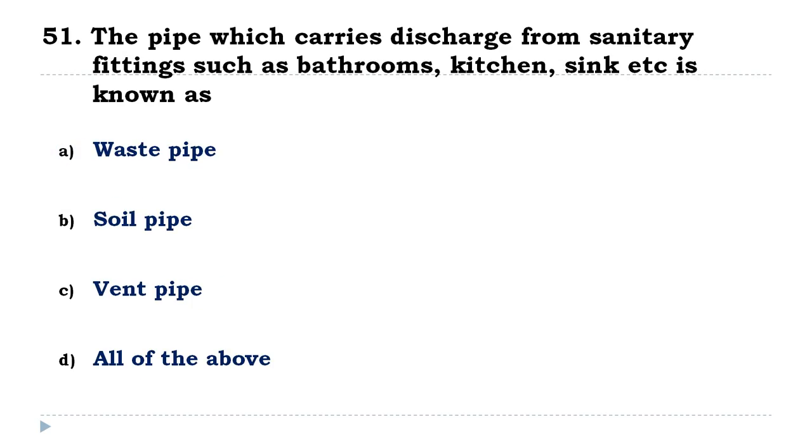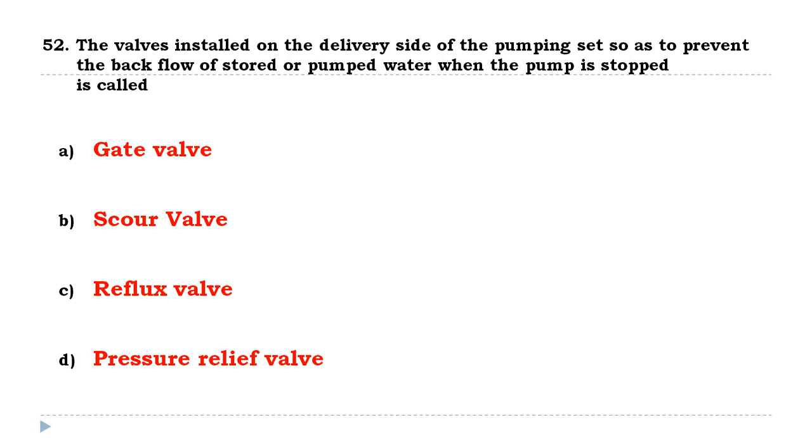The pipe which carries discharge from sanitary fittings such as bathrooms, kitchen, sink etc. is known as a waste pipe. The valves installed on the delivery side of a pumping set so as to prevent the backflow of stored or pumped water when the pump is stopped is called a reflex valve.